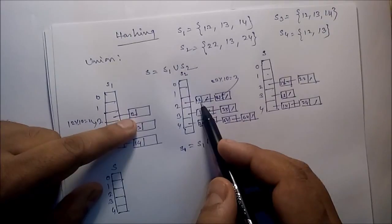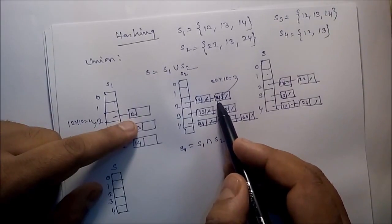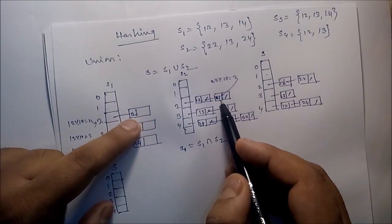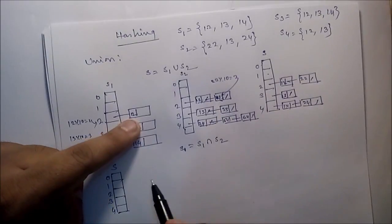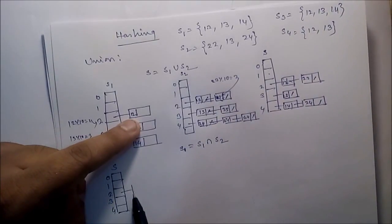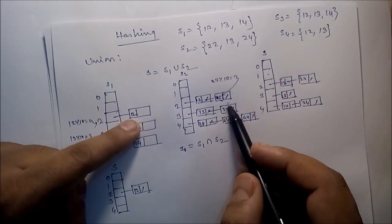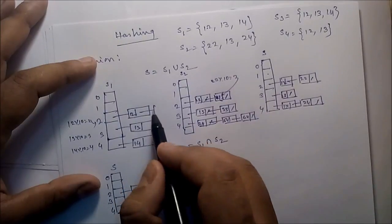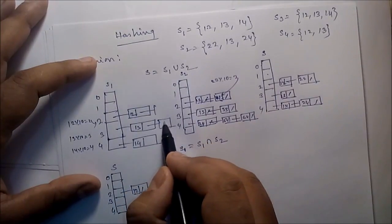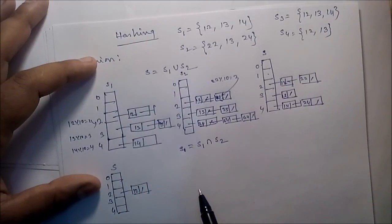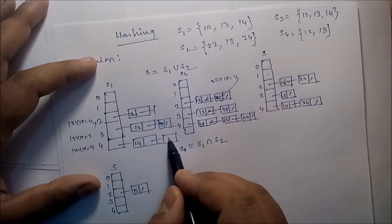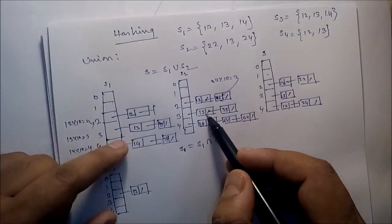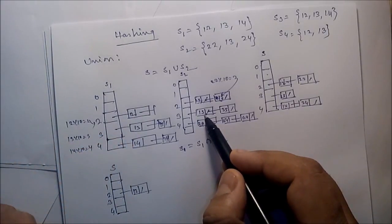Next, 12: 12 modulo 10 is 2. Check index 2 — 12 and 12 are the same, so if they are the same, take the data. Store 12 here. Suppose 93 is also in S1, and S2 also has 54 and 74. Take 13 and compare all the data — 13 is there, so take 13 here.